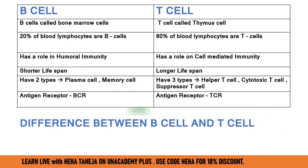One thing we will discuss today is about the B-cell and T-cell difference. It is very important — from a signaling or immunology point of view, B-cells and T-cells are lymphocytes. You will definitely hear about lymphocytes in your small classes, graduation or post-graduation. Lymphocytes are one type of immune cells, one type of WBC, which helps us to maintain our immune system and fight infections and diseases.